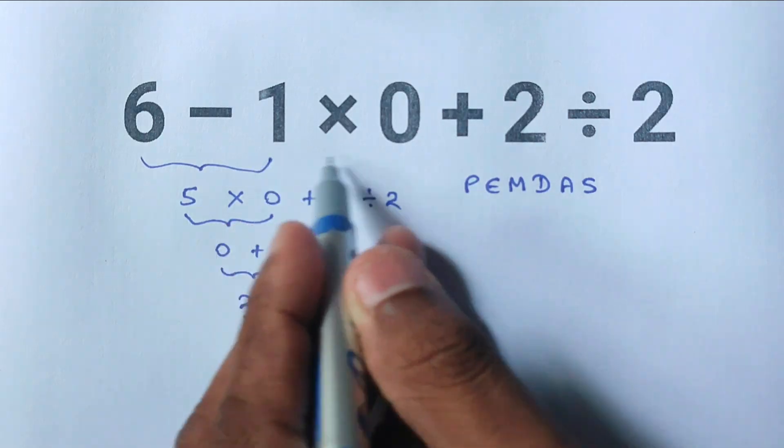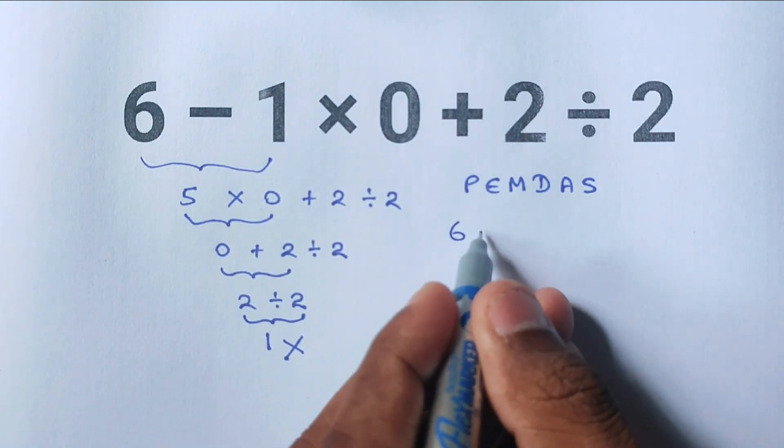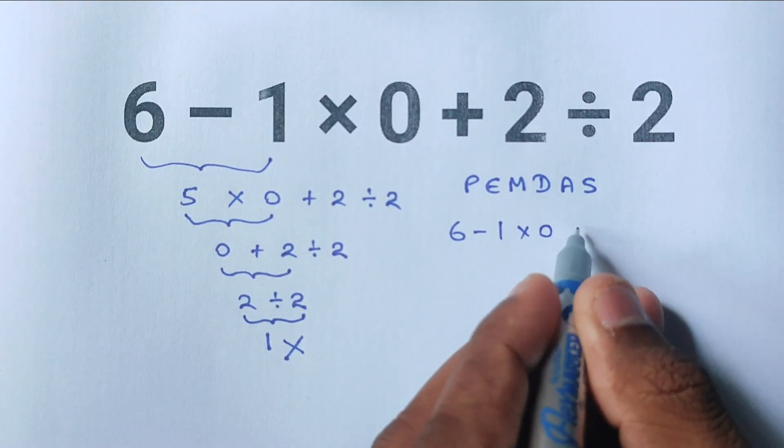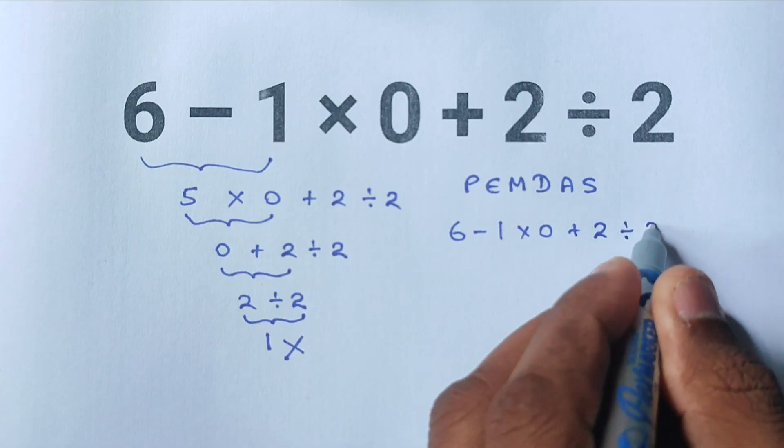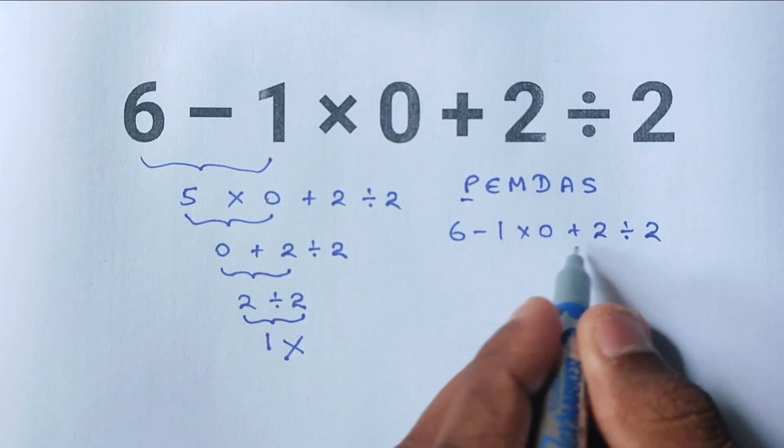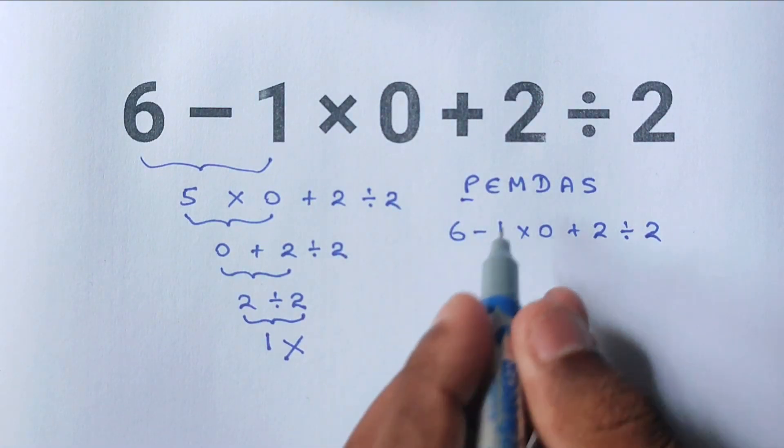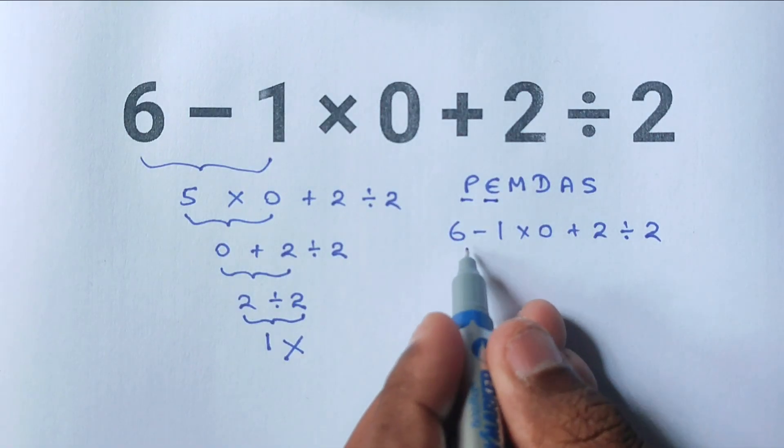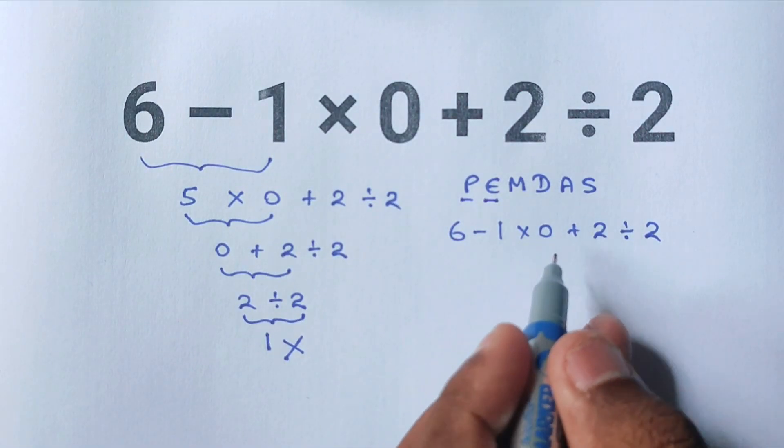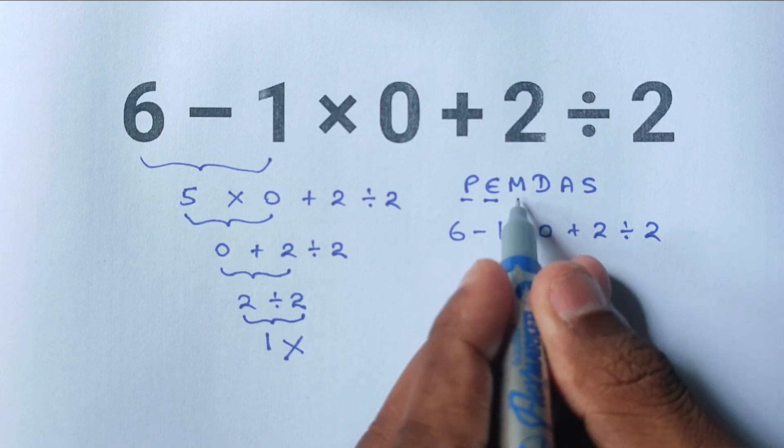So let's apply PEMDAS to this problem: 6 minus 1 times 0 plus 2 divided by 2. First, we check for parentheses, but we don't see any here. Next, we check for exponents, and there aren't any exponents in this problem either. After that comes multiplication and division.